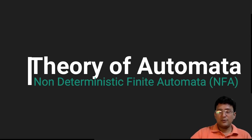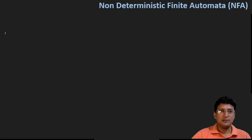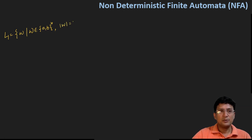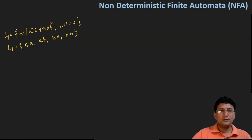Let's take some examples and try to solve for the NFA — we will learn how to build the NFA for different examples. So let's say this is the language L1, where W is an element of {A,B}* and the length of W equals two. So the language will contain AA, AB, BA, or BB. This is a finite set with four elements.